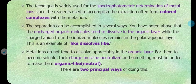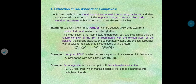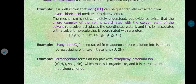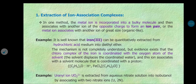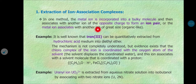Extraction of metal ions is possible using two different methods. The first method is extraction of metal ions through metal ion association complexes, where the metal ion forms an ion association complex, becomes neutral, and can then distribute into the organic layer from the aqueous layer. In this method, the metal ion is incorporated into a bulky molecule, and association takes place with another ion of opposite charge to form an ion pair complex.